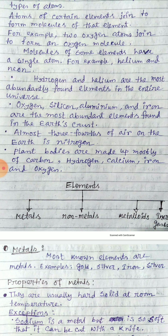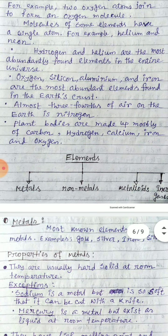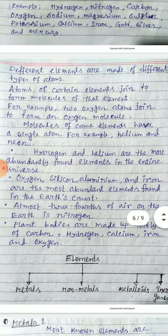Almost three-fourths of the air on Earth is nitrogen — so nitrogen is the maximum gas present in air. Plant bodies are made up of mostly carbon, hydrogen, calcium, iron, and oxygen.